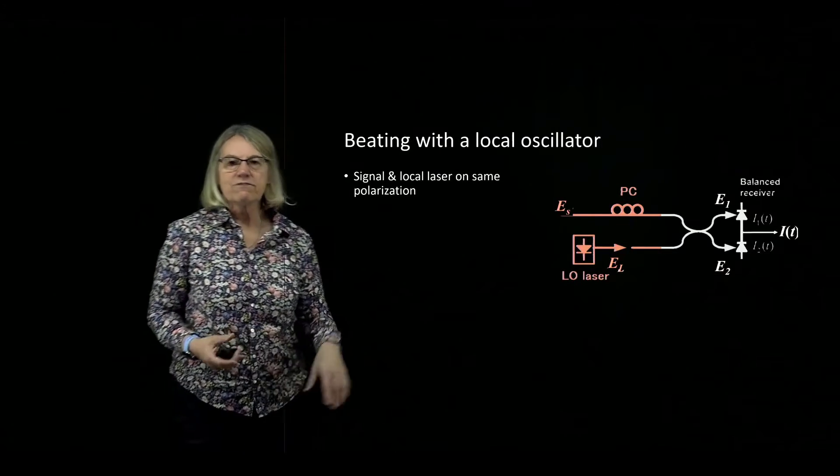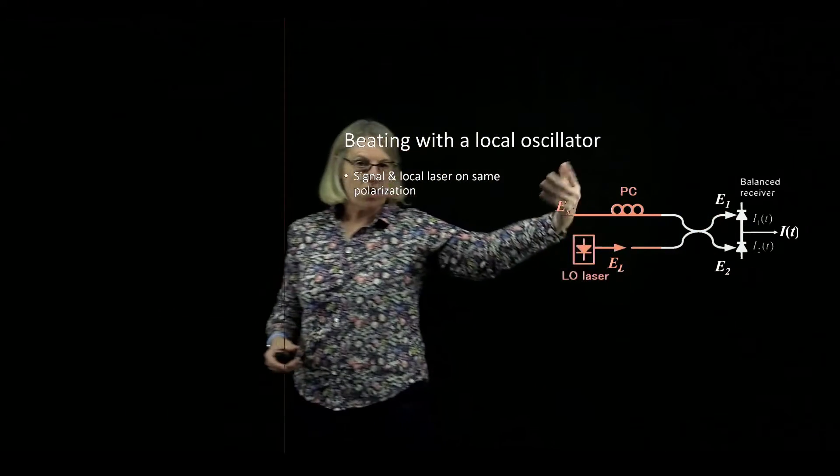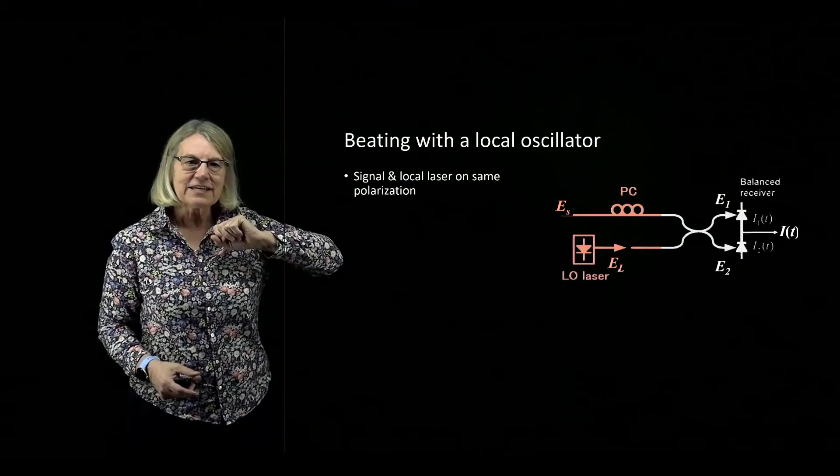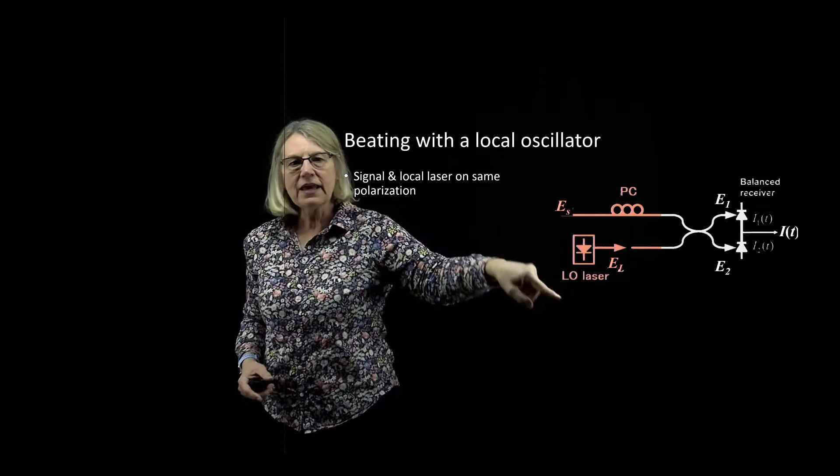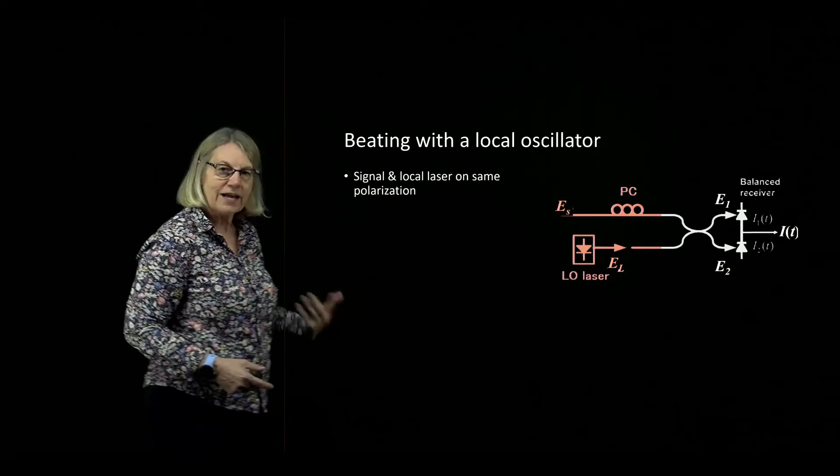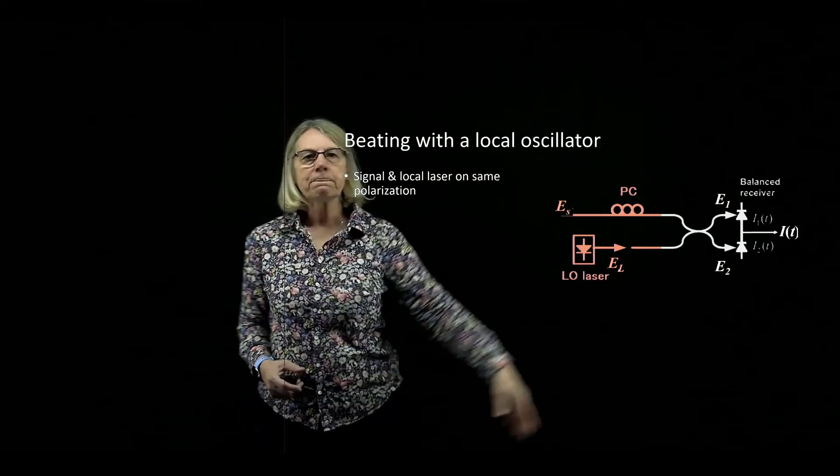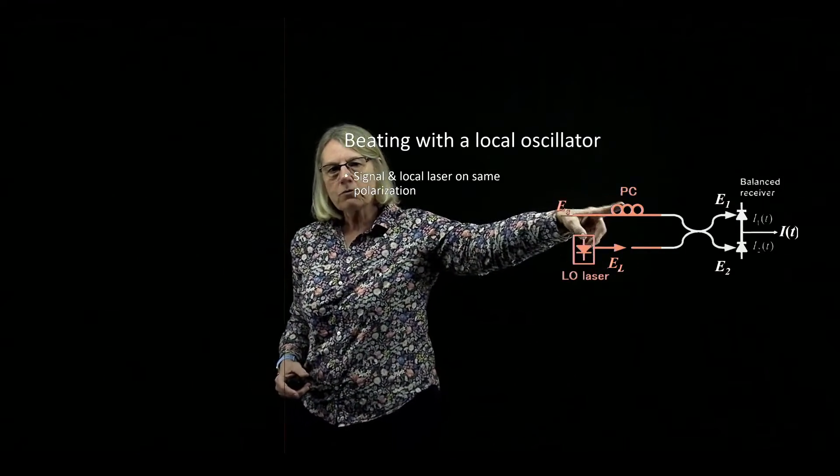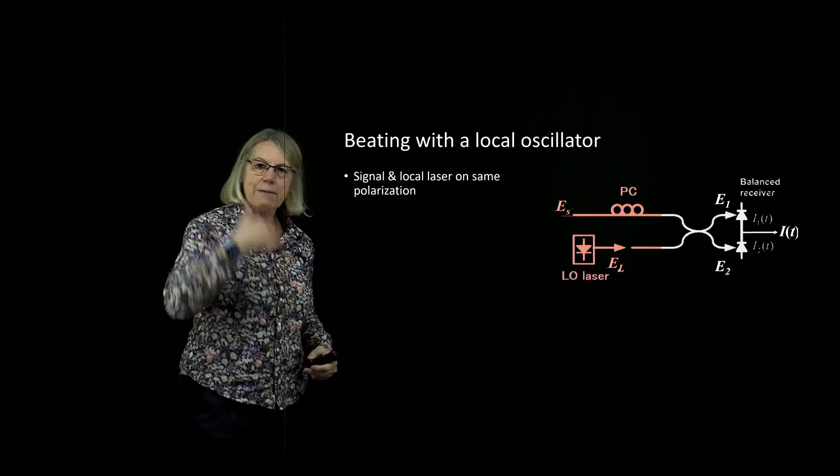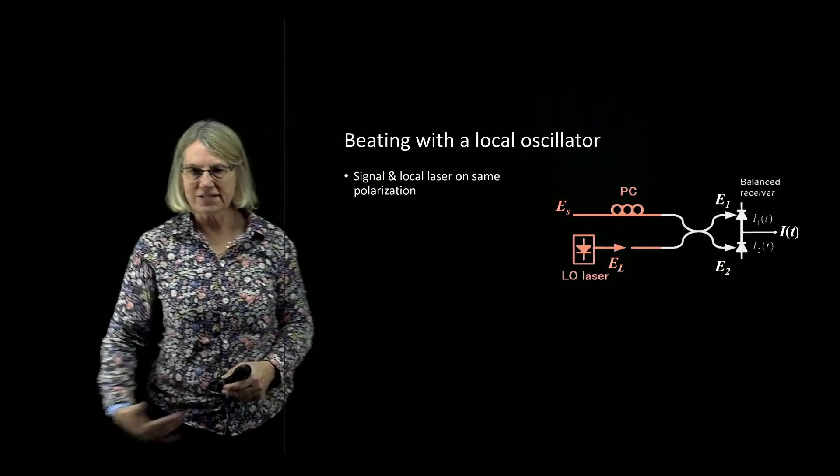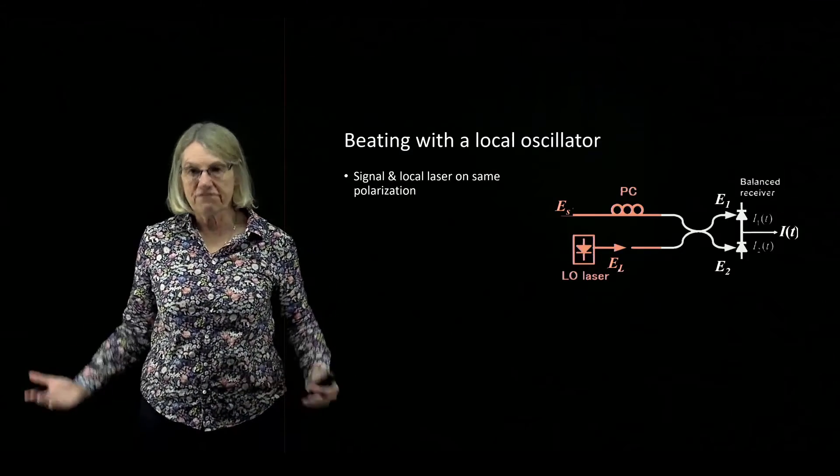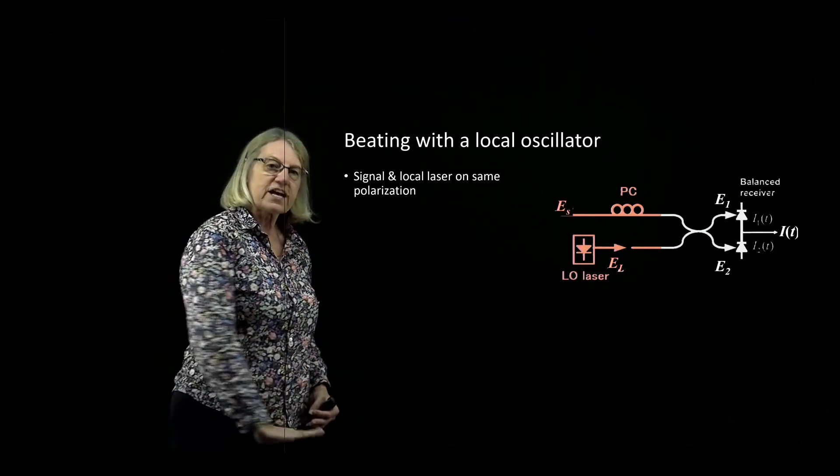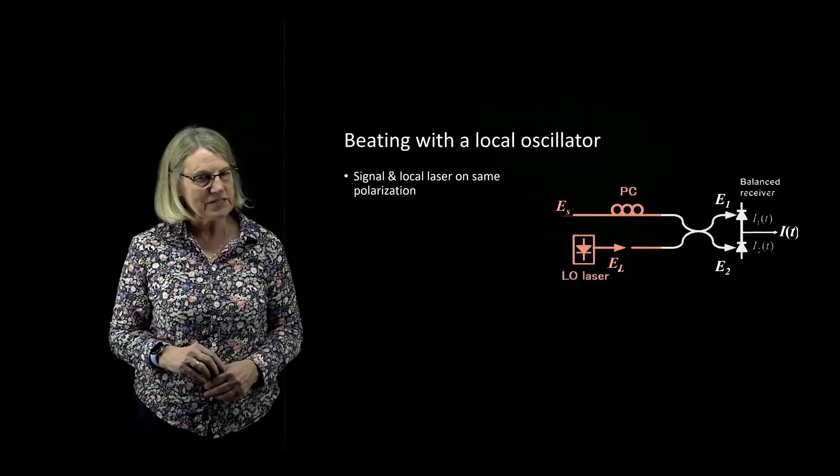So here is the form of the coherent receiver which has our three essential building blocks in it. And let's start with the local oscillator. So I have my signal coming in and I also have another light source at my receiver. And you'll notice that I put a polarization controller here because the example I'm going to give you first is a single polarization example so that we can master the concepts of how to detect phase.